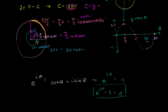If you've gone one fourth around, that's tau over 4 radians. Halfway around is tau over 2 radians. Three fourths around is 3 tau over 4 radians. All the way around is tau radians. If someone tells you they have an angle of 10 tau radians, you'd go around exactly 10 times — much more intuitive.